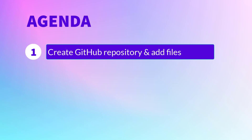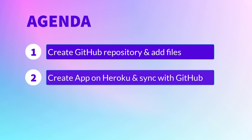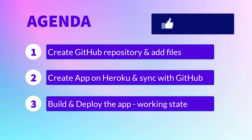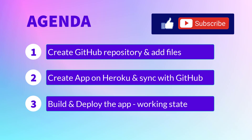So the agenda for this video: we will start with creating a repository on GitHub and adding all the necessary files, then we will create an app on Heroku and sync this GitHub repository with Heroku, and finally build the application and make it run permanently. Smash the like button to say hi to the YouTube algorithm, and subscribe to this channel to get more Python content and build amazing stuff using Python.